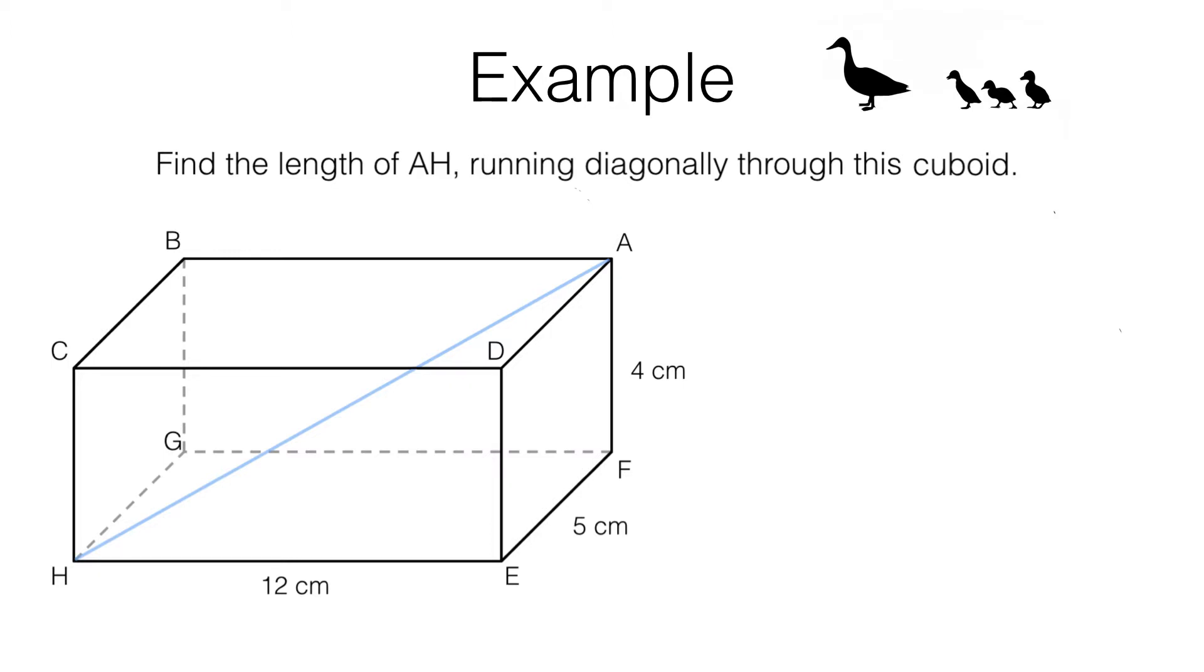Now let's check out this question. We have a cuboid and we need to work out the length of this diagonal here. By joining opposite vertices in a cuboid like this, you end up getting the longest possible line segment that you can fit into the cuboid. To work out this length here, here's what we do.